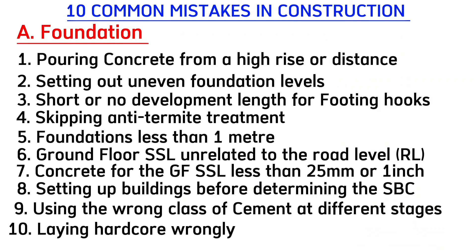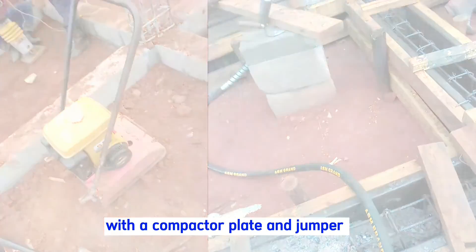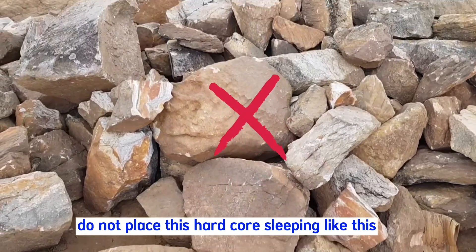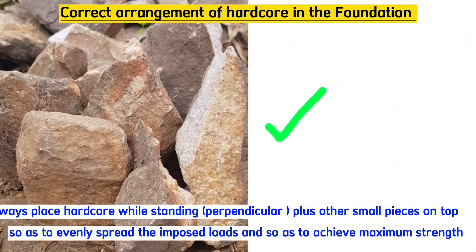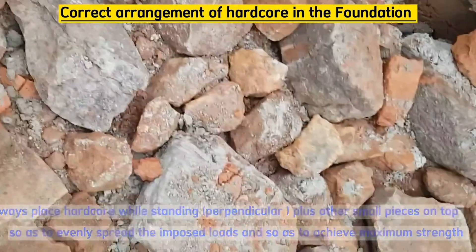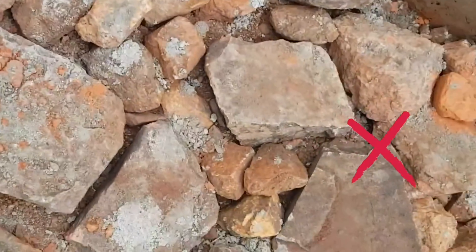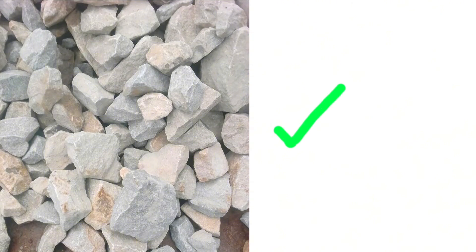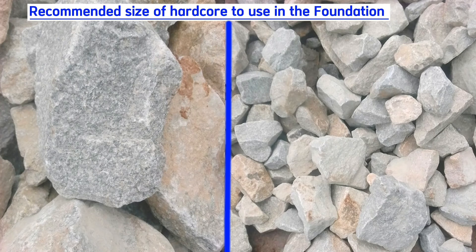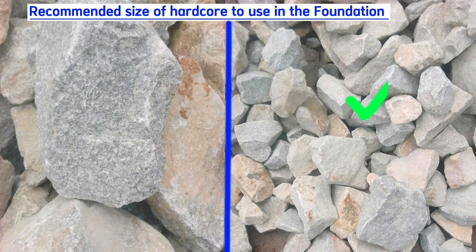Common mistake number ten is laying hardcore at this stage wrongly. After compacting the maram with a jumper, do not place hardcore lying flat — instead, place it standing upright so as to evenly spread the imposed loads and achieve maximum strength. Also, do not use oversized hardcore at this stage; use medium-sized hardcore because that is when maximum strength is achieved.